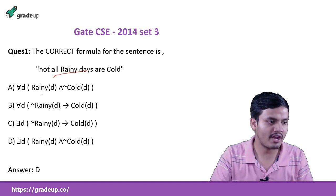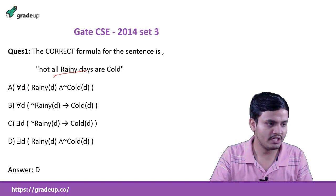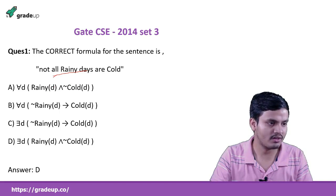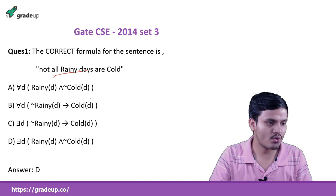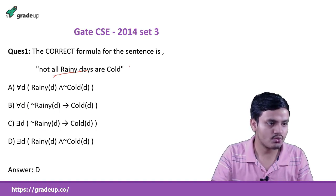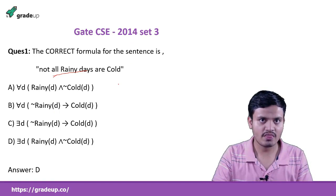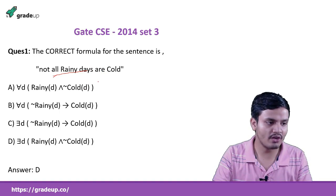We need to find which one of the options is correct. Let's see the first one: 'for all D, D is rainy and not cold' — that is not correct. The second: 'for all D, if day is not rainy that implies day is cold' — that is also not correct.